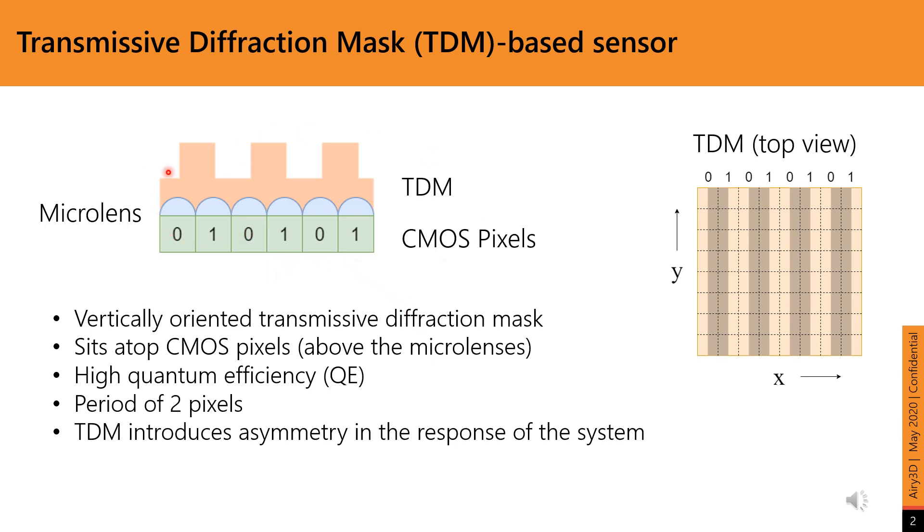The TDM-based sensor consists of a phase-modulated diffraction mask that sits on top of an off-the-shelf CMOS sensor. As this is a transmissive mask, the TDM-based sensor has a high quantum efficiency. The TDM works with existing pixel architectures and there is no need for custom pixels.